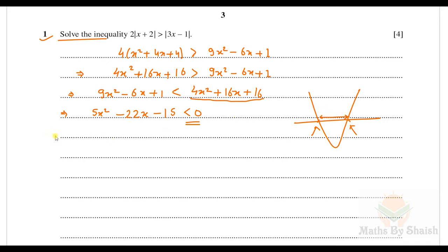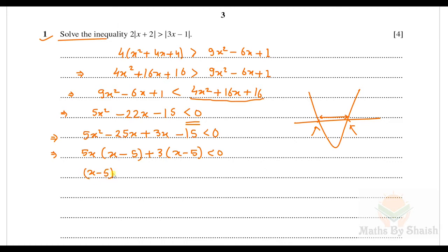To find the roots, we note 5×(−15)=−75, and 22 can be split as 25−3. So we factor: 5x²−25x+3x−15 less than 0, giving 5x(x−5)+3(x−5) less than 0, which is (5x+3)(x−5) less than 0. The roots are x=−3/5 and x=5, so the solution is −3/5 < x < 5.